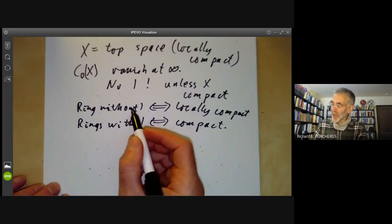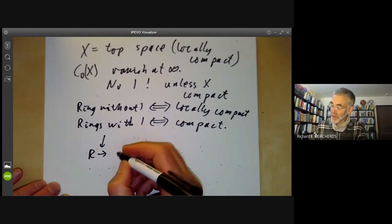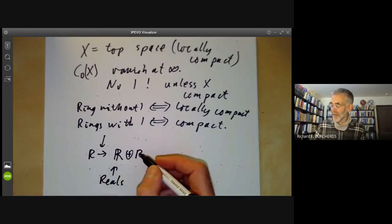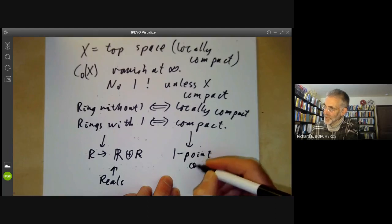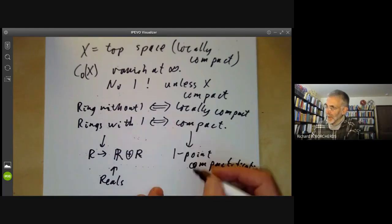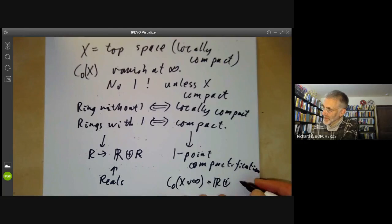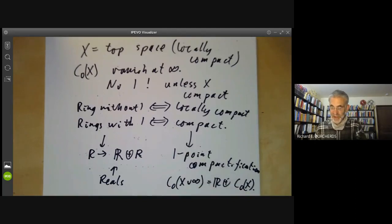Roughly speaking, rings without identity correspond to locally compact spaces, and rings with identity correspond to compact spaces. From an analyst's point of view, demanding all rings have an identity is like demanding all locally compact spaces be compact, which is rather too restrictive. The operation of adding an identity to a ring corresponds geometrically to taking the one-point compactification of a locally compact space: C₀(X) ⊕ ℝ corresponds to adding a point at infinity.